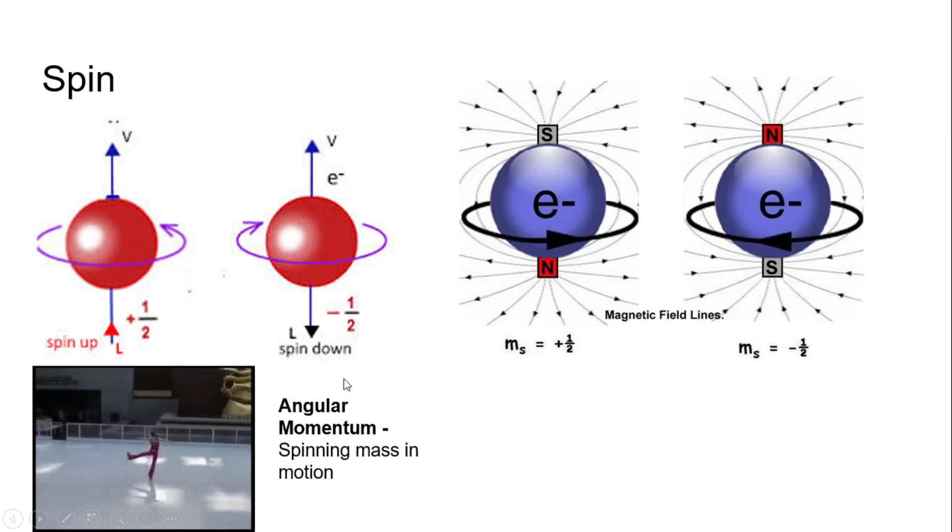So I talked about quantized angular momentum. What the heck does that mean? Well, angular momentum is just, you can think of a figure skater spinning around. It's just spinning mass in motion. So these electrons were spinning, so they had angular momentum.